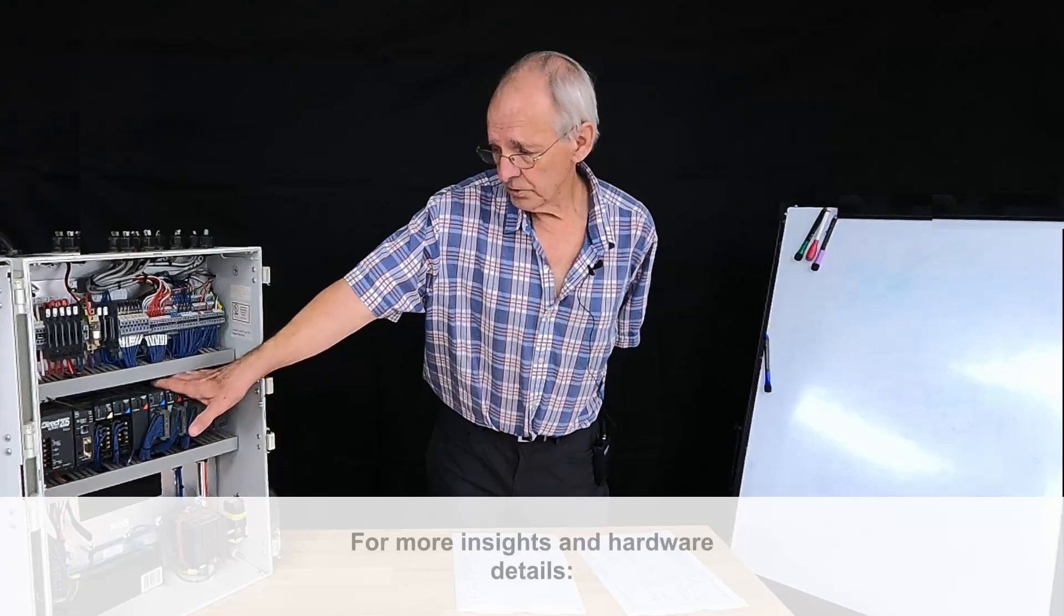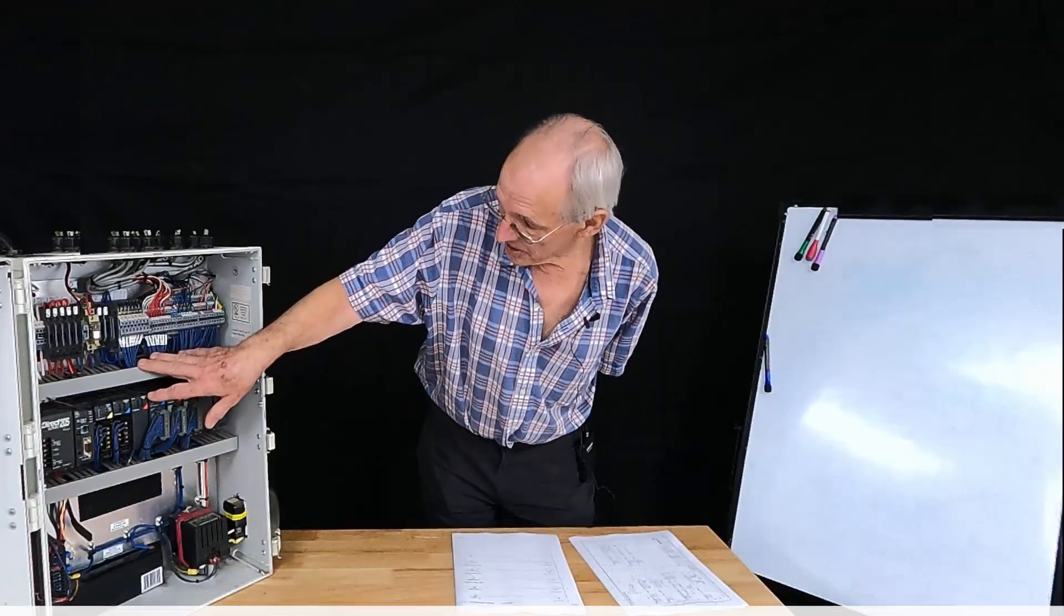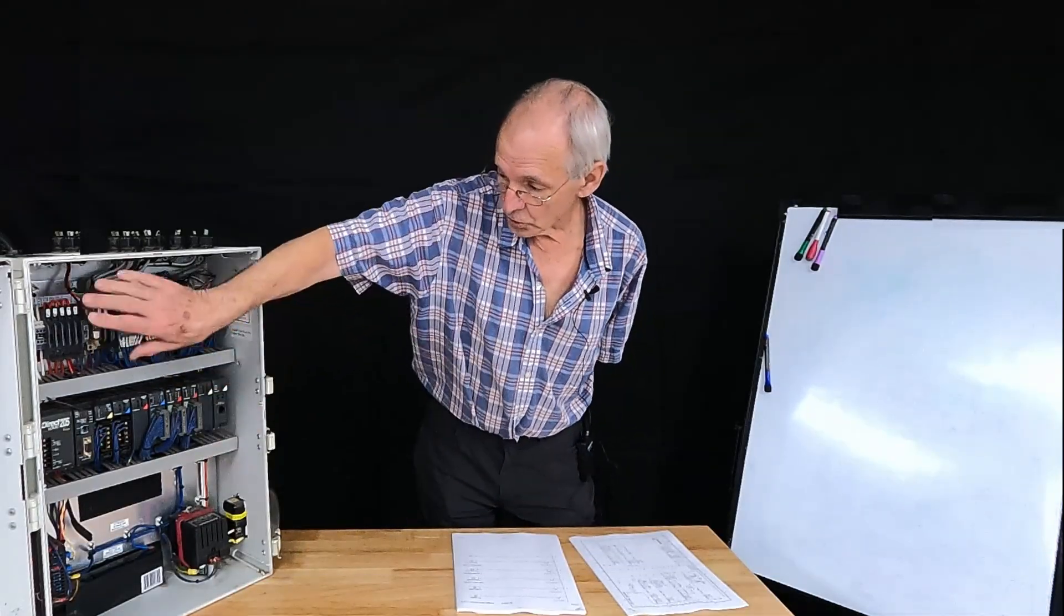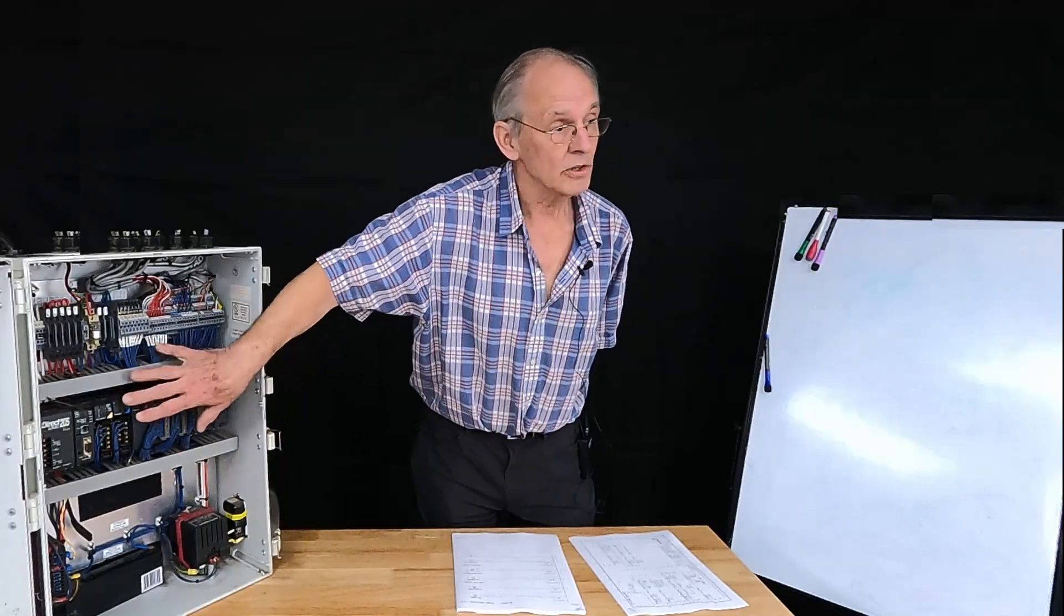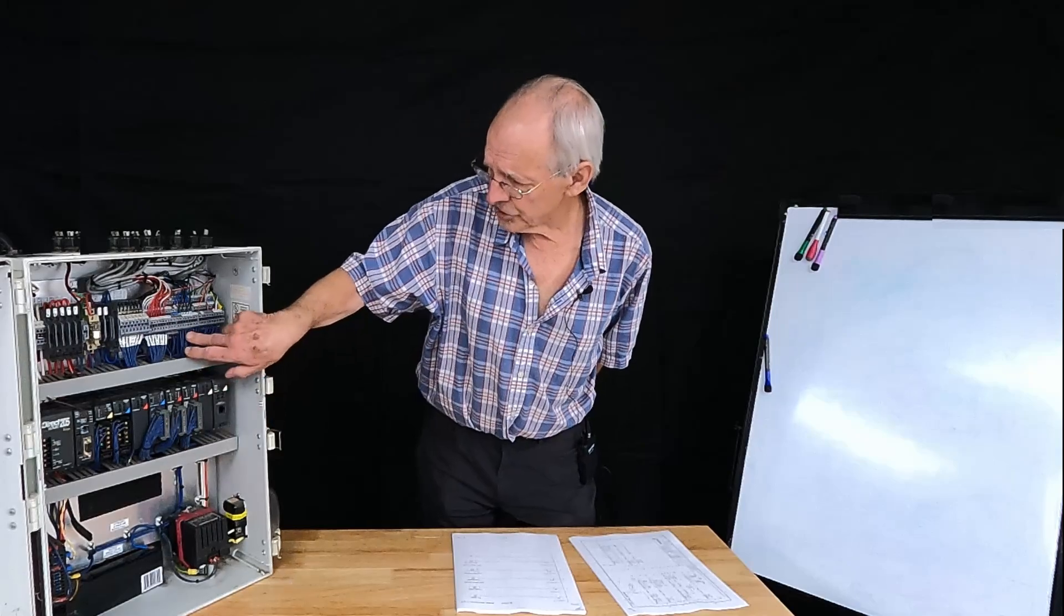If you notice here, in order for the wiring to get from one level to the other, it had to go under the PLC. And so there's no vertical wireways for wires, there's just the horizontal. And if you notice, there's no wire markers on a bunch of the wires.